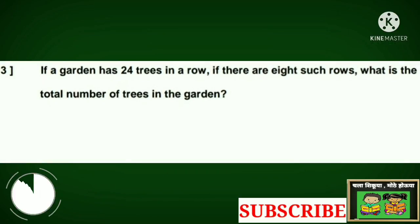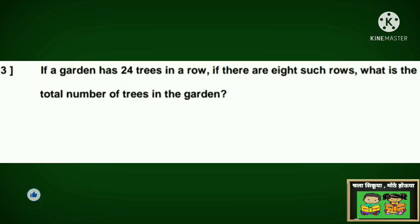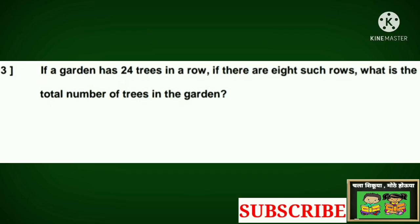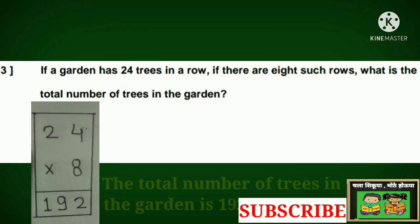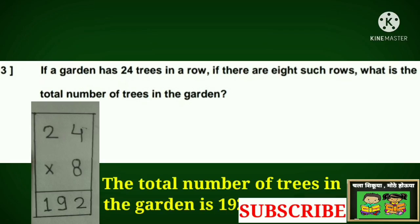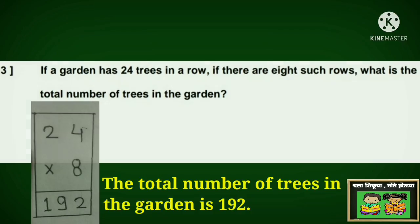Question number 3. If a garden has 24 trees in a row, and there are 8 such rows, what is the total number of trees in the garden? The answer is, the total number of trees in the garden is 192.